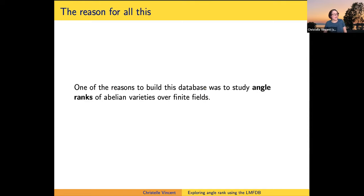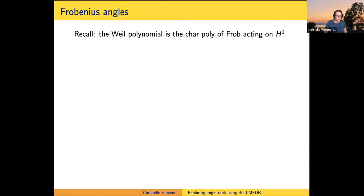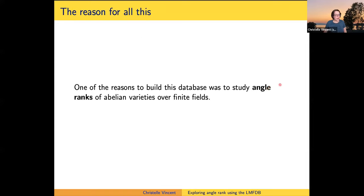One of the ulterior motives for building the database was to study angle ranks of abelian varieties. Alex Miller was studying them in his PhD thesis, and Taylor was talking to him about it. It was really hard to find out much about angle ranks — hard to pin down what's possible, what conjectures we could make. A good idea was: let's generate data, generate the maximum amount of data and put it on the internet and make a database of it.